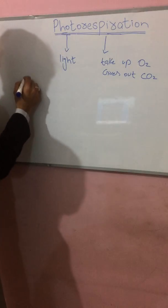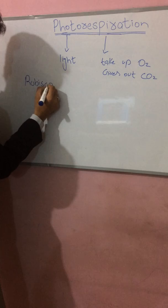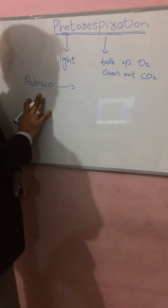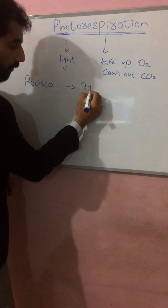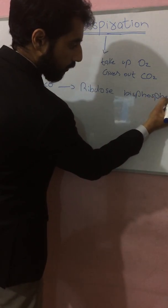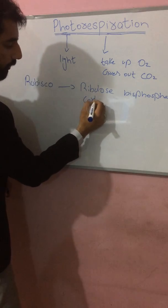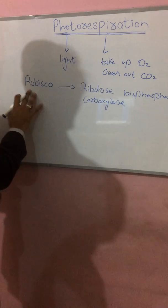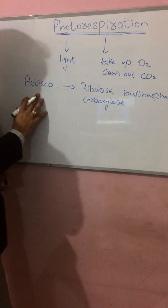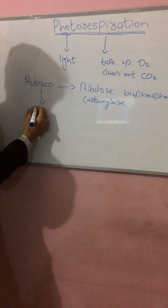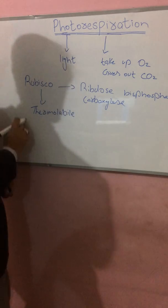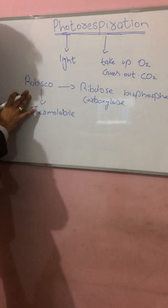The enzyme rubisco is very abundantly present and plays a very important role in this process. The full form of rubisco is ribulose bisphosphate carboxylase. This enzyme has the property of being thermolabile — meaning it can change its activity with changes in the environment.